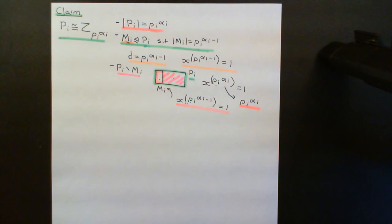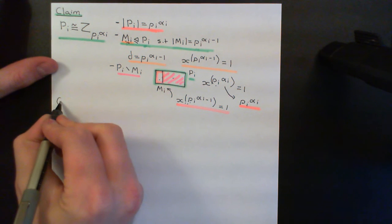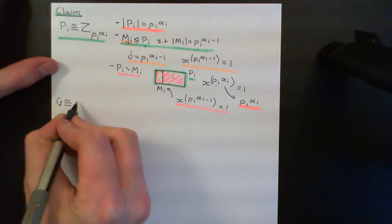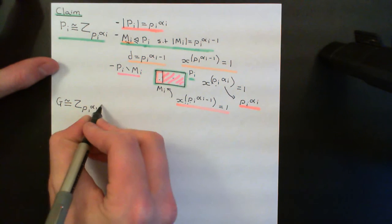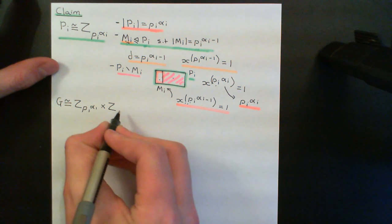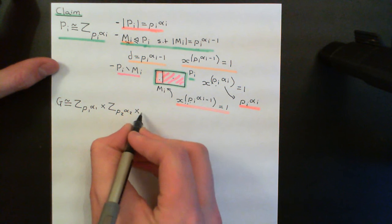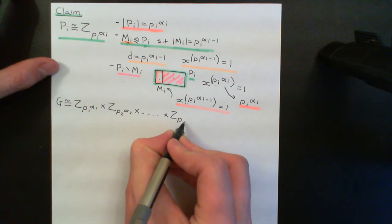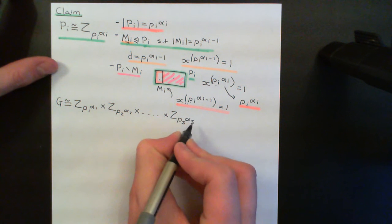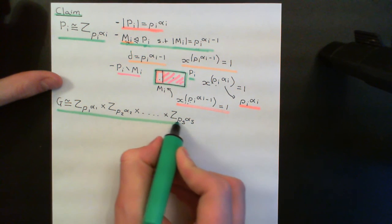I also know that the group is isomorphic to the direct product of all of these. So overall, putting all of this information together, G is isomorphic to the cyclic group of order p_1^α_1, direct product with the cyclic group of order p_2^α_2, direct product all the way up to the cyclic group of order p_s^α_s.